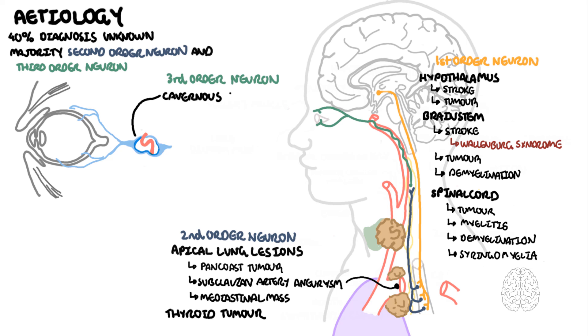Causes of third-order neuron include the cavernous sinus issues such as cavernous sinus tumors, thrombosis in the veins, internal carotid artery aneurysms, and pituitary tumors.